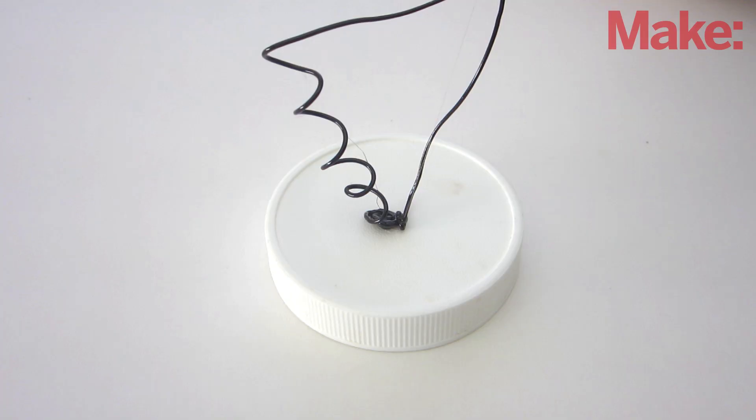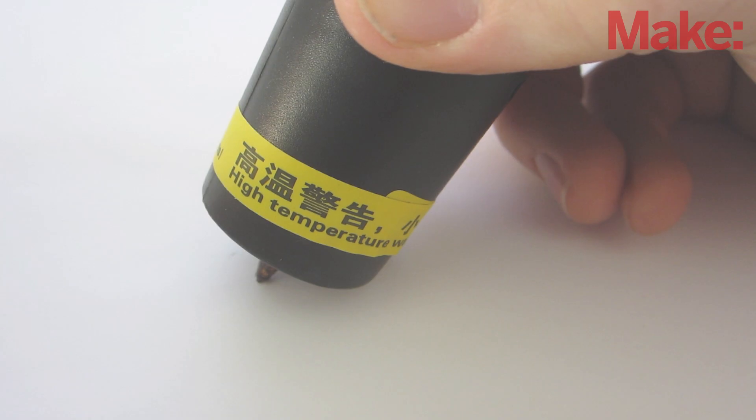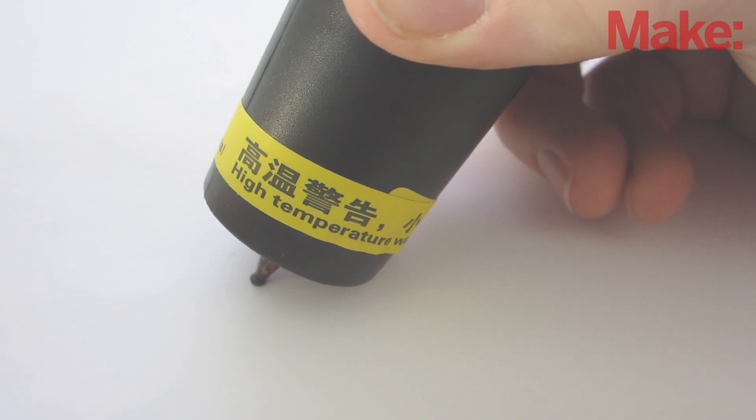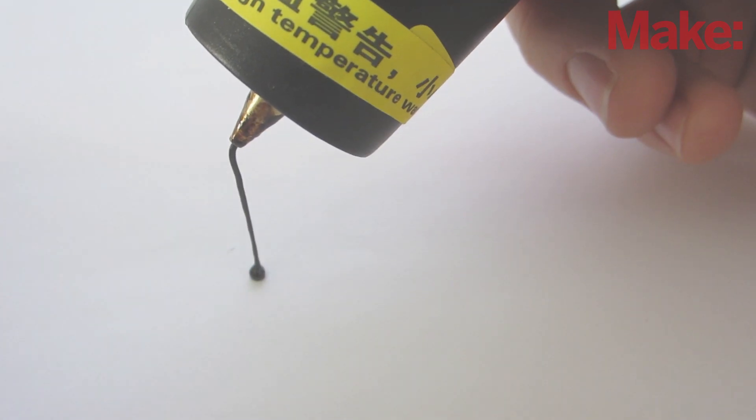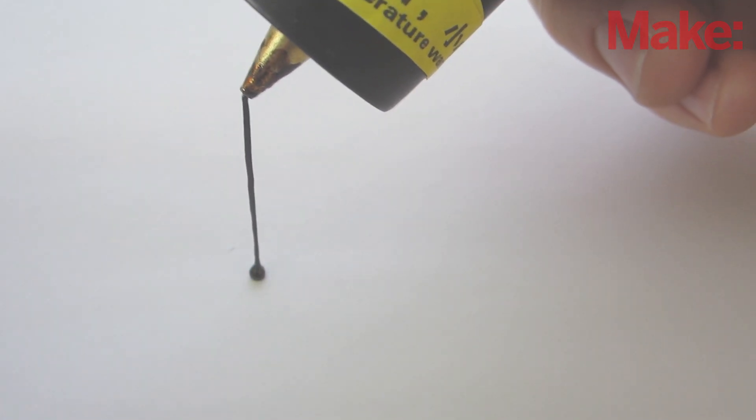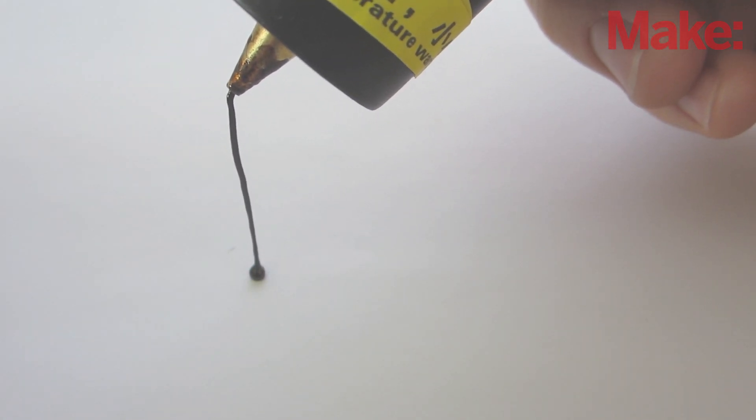Now it's time to try freehand 3D drawing. Start by making a large drop of plastic to act as an anchor point. Then, slowly lift the pen off the paper while extruding to make a line. Wait for the first section of plastic to harden before moving your pen.